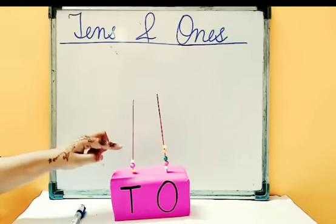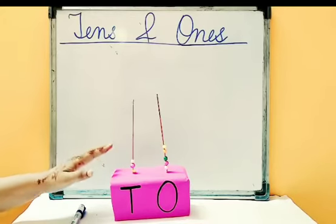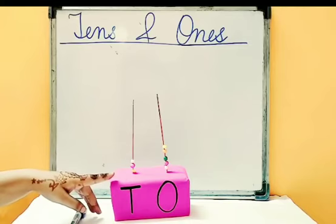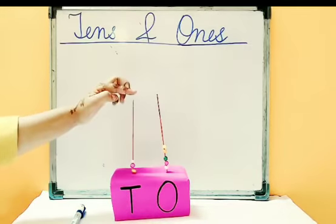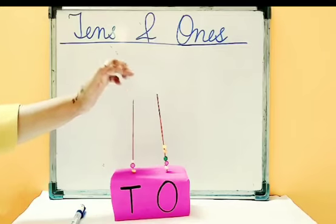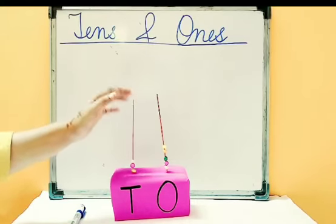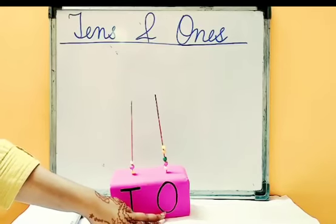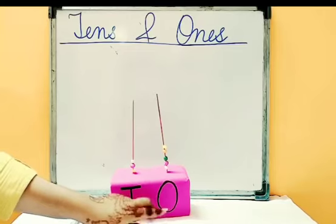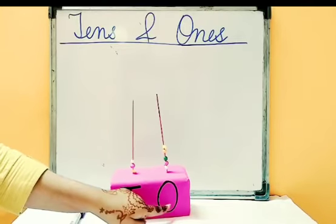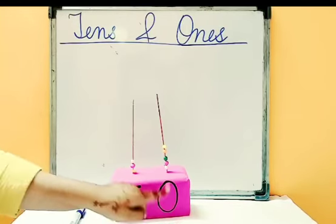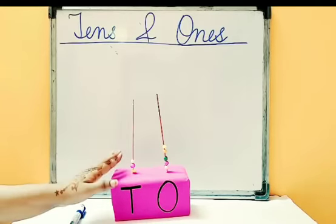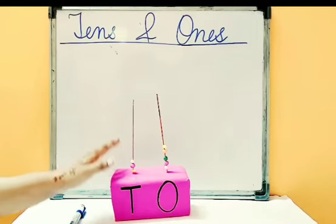These beads are representing the digits of a number. In a two spike, this is spike one and two. There are two spikes. In a two spikes abacus, the spike on the right hand side denotes at ones place.